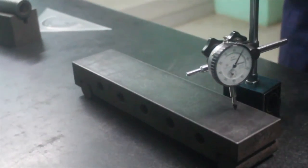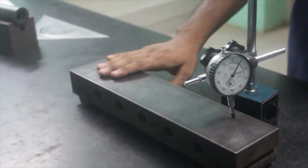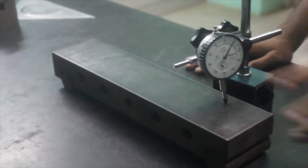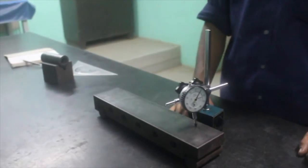This 0.02 means the error of this particular surface. This is how we find the flatness and the error of this flatness by using the mechanical comparator. Thank you.